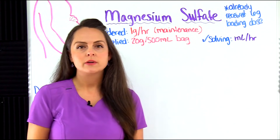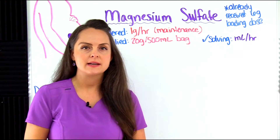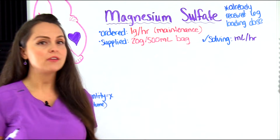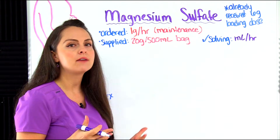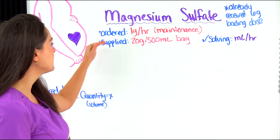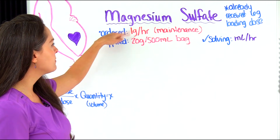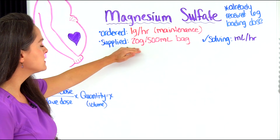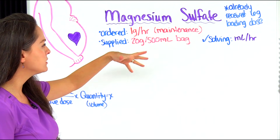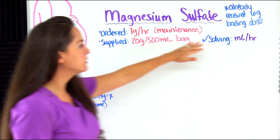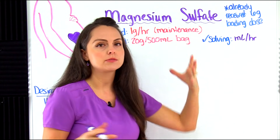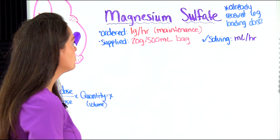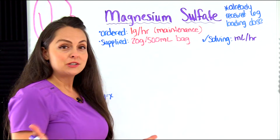This problem says we have a patient who's 29 weeks pregnant with eclampsia and they've already received a six gram loading dose. The healthcare provider now wants a maintenance dose — the order is one gram per hour. You're supplied with a bag of IV mag that reads 20 grams per 500 milliliters, and you're trying to solve for milliliters per hour.